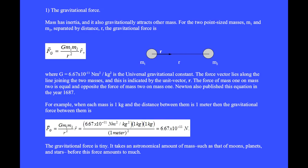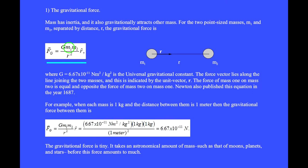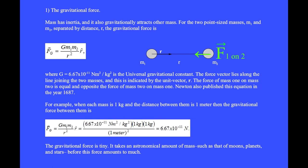Mass has inertia, and it also gravitationally attracts other masses. For two point-sized masses M1 and M2 separated by distance R, the gravitational force is F sub G equals big G — the gravitational constant, 6.67 times 10 to the minus 11 newton meter squared per kilogram squared — times mass 1 times mass 2 divided by R squared. The force vector lies along the line joining the two masses, indicated by the unit vector R-hat. The force of mass 1 on mass 2 is equal and opposite to the force of mass 2 on mass 1. Newton also published this equation in the year 1687.